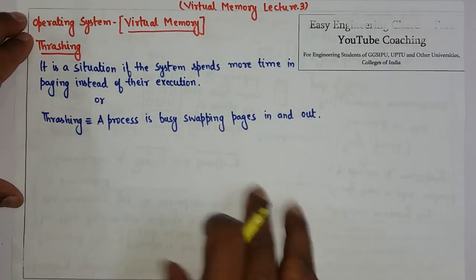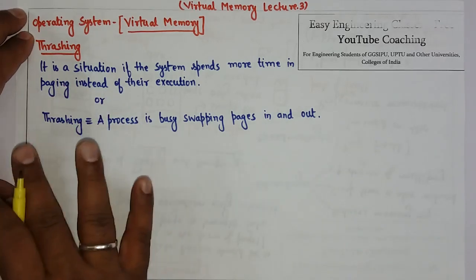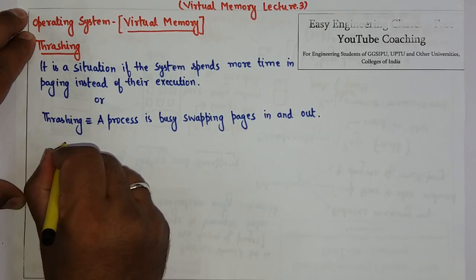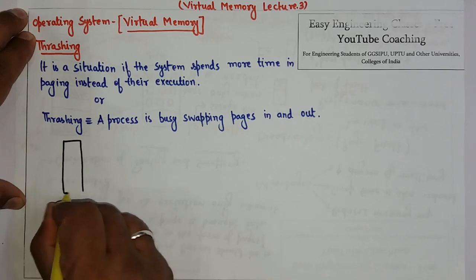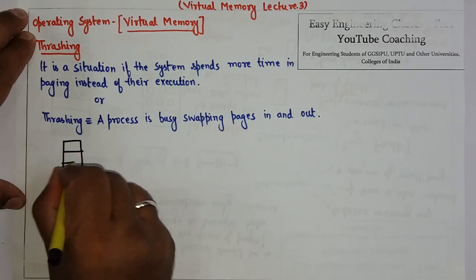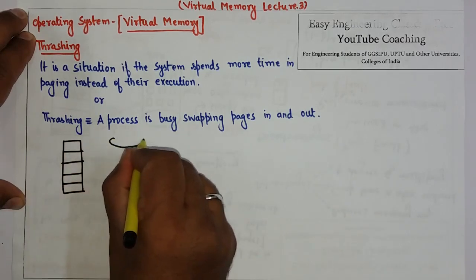Now what happens in virtual memory? Paging and swapping concept is used. The main memory is a situation in which a process must be in demand according to swap in and swap out.